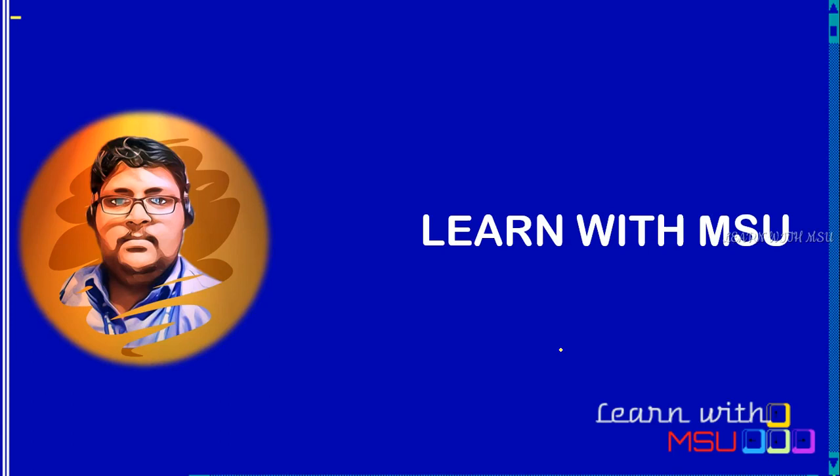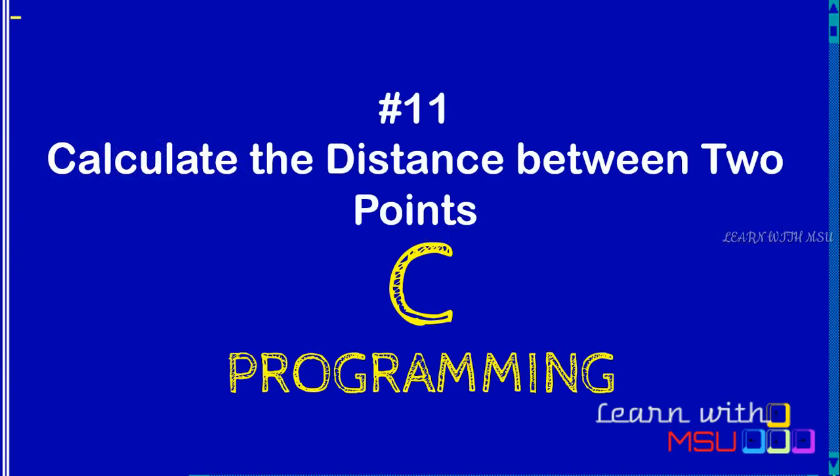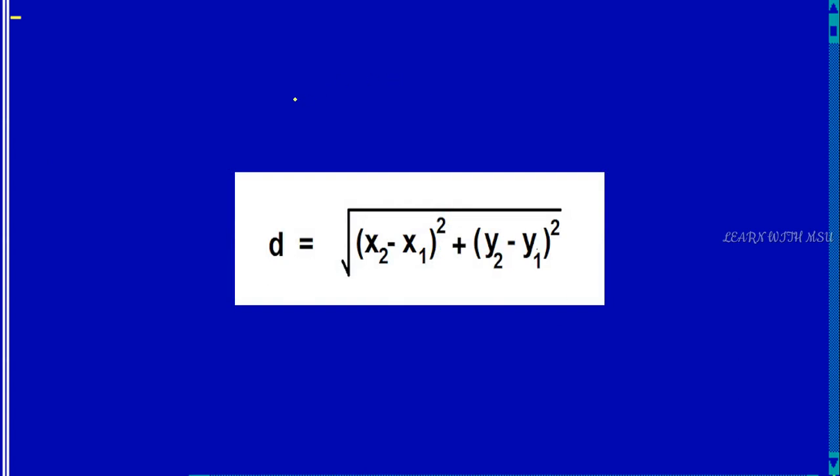Hi friends, welcome to our YouTube channel Learn with MSU. In this video, we are going to discuss how to write a C program to calculate the distance between two points. Here we are going to get four different inputs: x1, y1, which is the location of the first point, and then we are going to get the input x2, y2. You can get your input in any order.